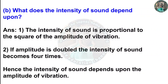(b) What does the intensity of sound depend upon? Answer: The intensity of sound is proportional to the square of the amplitude of vibration. If the amplitude is doubled, the intensity of sound becomes four times. Hence the intensity of sound depends upon the amplitude of vibration.